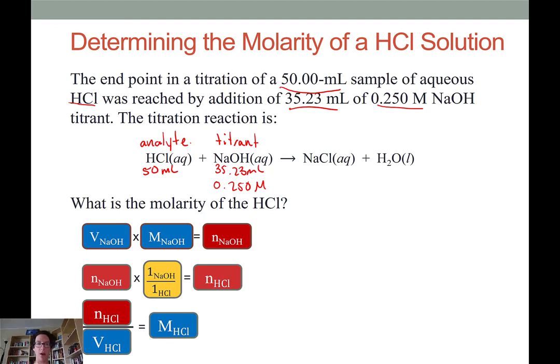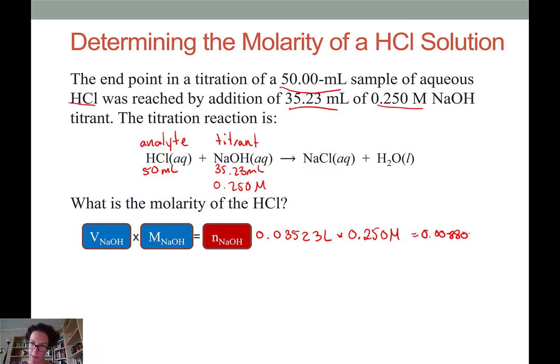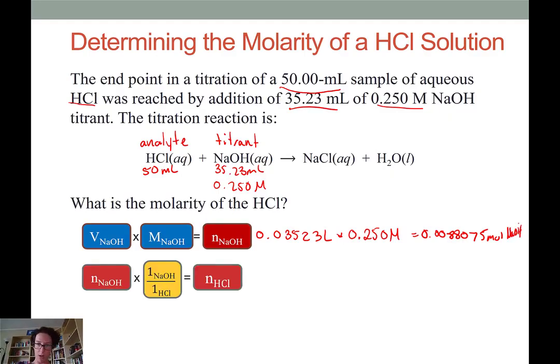Setting this all out in math, we would simply take the volume of sodium hydroxide. I'm going to do a quick mental math, converting my milliliters into liters. So I have 0.03523 liters of sodium hydroxide times 0.250 molar, and that gives me 0.0088075 moles of our NaOH. Looking at our next step, we're simply multiplying by 1, so that's simple math. That means in our analyte, there must have been the same number of moles of HCl.